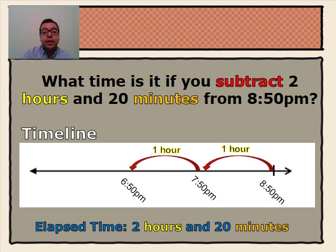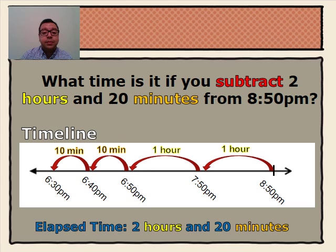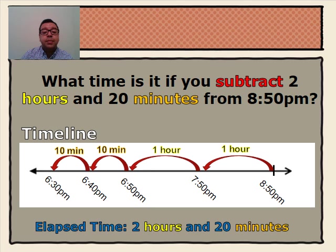Now, we need to subtract our 20 minutes. So, where we left off, 6:50 p.m., we subtract 10 minutes to get to 6:40 p.m., and then subtract the other 10 minutes to get us to 6:30 p.m. So, by subtracting 2 hours and 20 minutes from 8:50 p.m., we have a start time of 6:30 p.m.